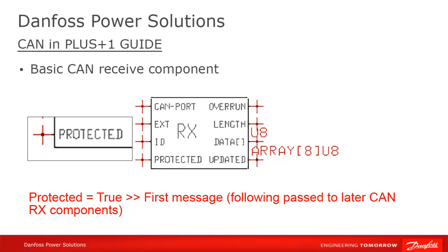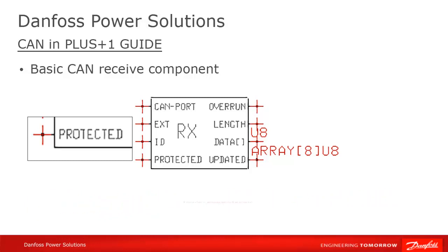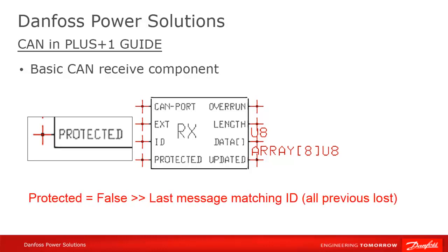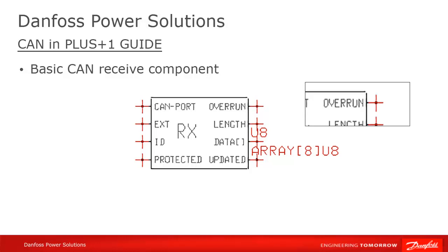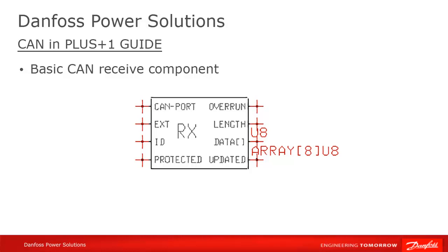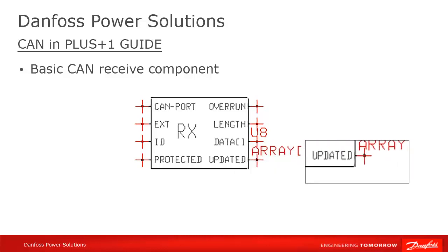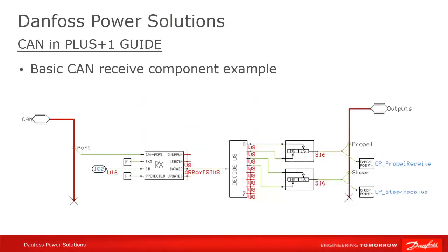Subsequent messages can be picked up by later CAN receive components in your guide code. All messages during the previous execution loop that are not allocated to a CAN receive component will be purged. If the protected flag is set to false, then the last message with this message ID in the receive buffer will be assigned to this component. If multiple messages with this ID came in, then the overrun flag will be set to true. Length specifies the number of bytes of data attached to the message, with a data signal containing the actual array of values. Updated will be true on every loop where a valid message was received. Here's an example of how the basic CAN receive component would be used. If we split multibyte data types on the send side, they would have to be combined on the receive side. Likewise, encoded Boolean signals would need to be decoded to find the original values.